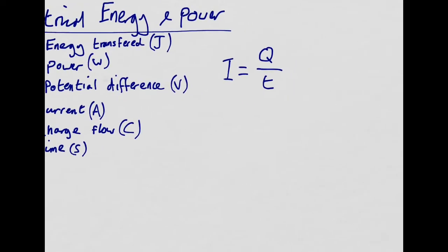You might see this written as charge flow is the same as the current times by time. You might see it written like that. These two equations are the same, they're just different arrangements of them. So that's current then. Current is charge divided by time. That's one of our equations.